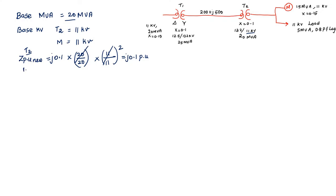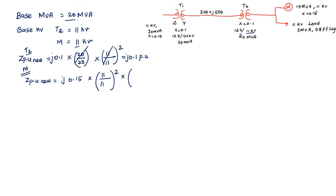Next, find out the per-unit impedance of the motor. ZPU_new = j0.15 × (20/15) × (11/11)². The kV terms cancel, and we get the motor per-unit impedance equal to j0.2 per unit.